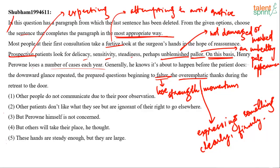Now, what should be the last line? Option one: 'Other people do not communicate due to their poor observation.' Their lack of communication has nothing to do with the loss of the case. The passage is not talking about communication or poor observation at all, so we will strike out option one for sure.